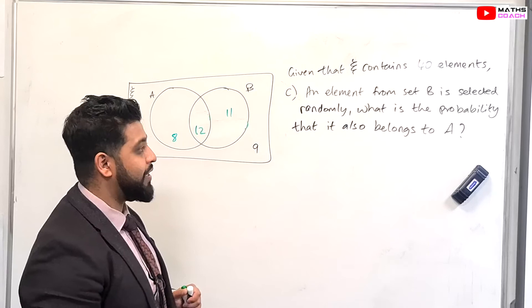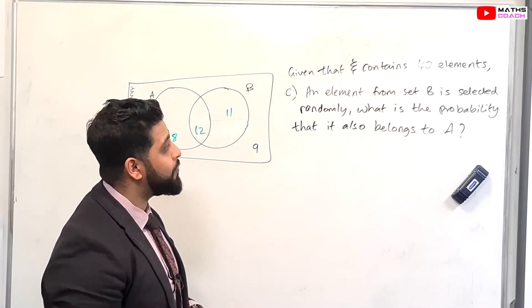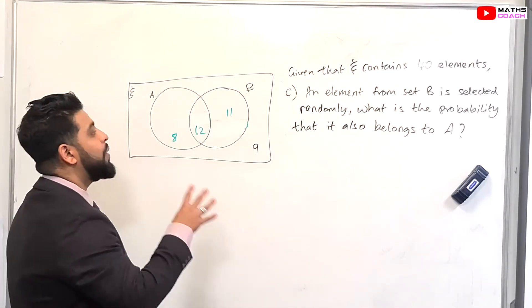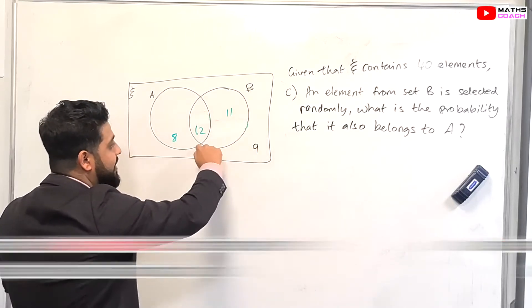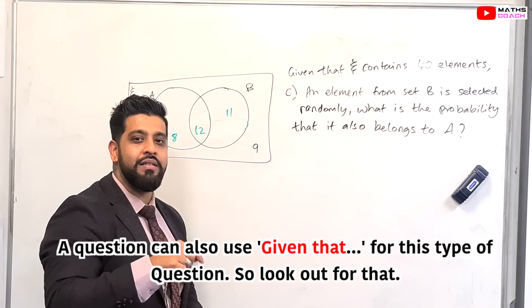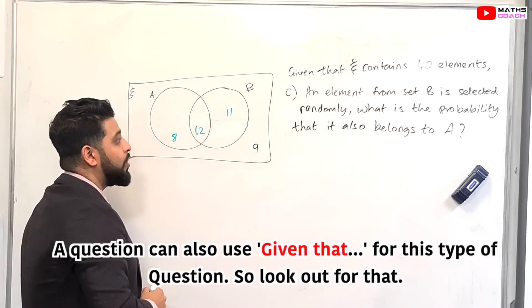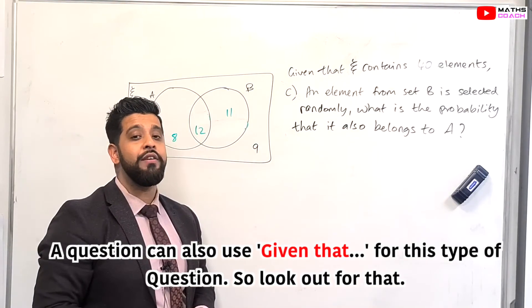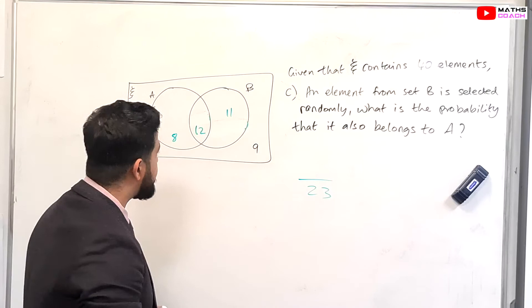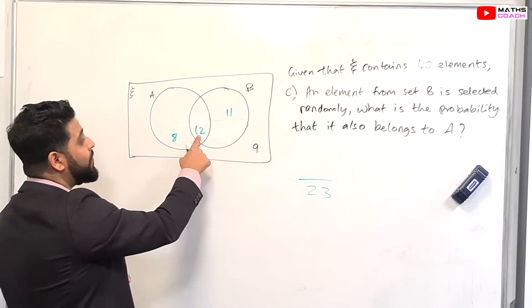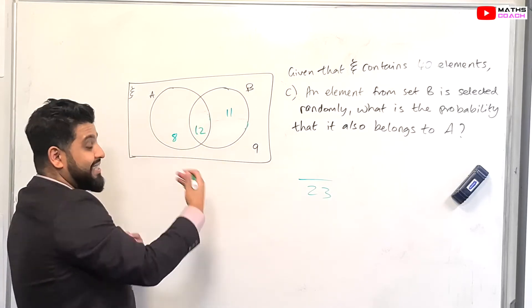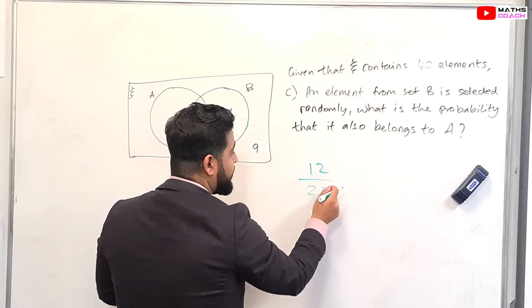Now, I am going to add a part C to the question that we've just done. And part C tells us that an element from set B is selected randomly. What is the probability that it also belongs to A? So we are told that something, an element is selected from B. Now, how much data or how many elements are inside B? B has 12 plus 11. So if you add 12 plus 11, you get 23. So B has a total of 23 pieces of data or elements. So what's the probability that it also belongs to A? This 12 is a part of the Venn diagram that also belongs to A. So this 12 is the intersection of A and B. So 12 out of 23 is our answer.